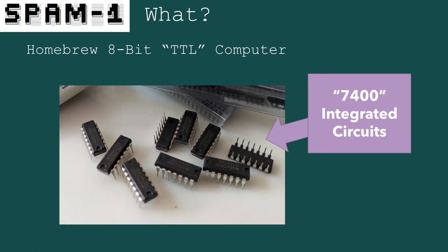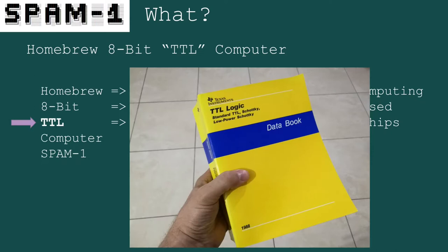TTL used a ton of power and so it was phased out for a new tech called CMOS. The CMOS gate uses a lot less power and has better signal levels. TTL devices are controlled by current and CMOS devices are controlled by voltage, and CMOS or its derivatives run the modern world. SPAM1 uses the CMOS variant of the 7400 chips, but the term 'TTL CPU' persists in the homebrew CPU community as a historic reference.